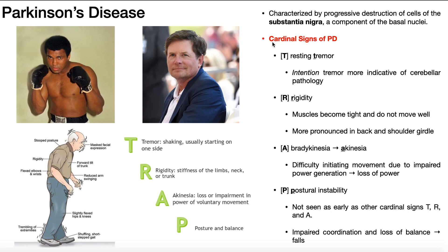Regardless of how it's acquired, Parkinson's disease is going to be associated with four major cardinal signs, and we remember these with the acronym TRAP — T-R-A-P. The T is for tremor, or resting tremor. This is a tremor that occurs when the person is not moving that particular part of the body. Normally the resting tremor will initially manifest in the hands. As long as the hands are not doing anything and just sitting there, they will exhibit that resting tremor.